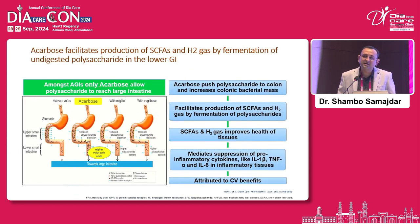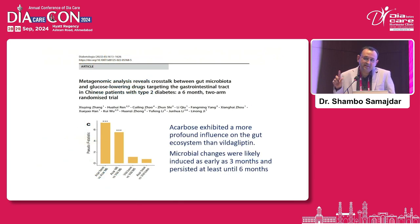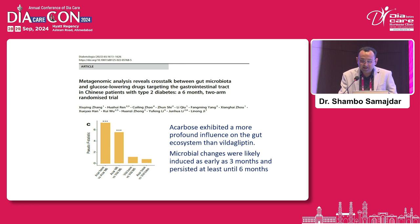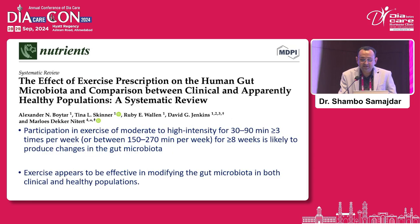Another molecule, acarbose, facilitates production of short-chain fatty acids. It differs from other alpha-glucosidase inhibitors pharmacologically — it is a bigger molecule than voglibose or miglitol — which is a major reason it provides gut ecosystem benefits that other alpha-glucosidase inhibitors do not. One study showed acarbose exhibited a better gut ecosystem outcome compared to vildagliptin.